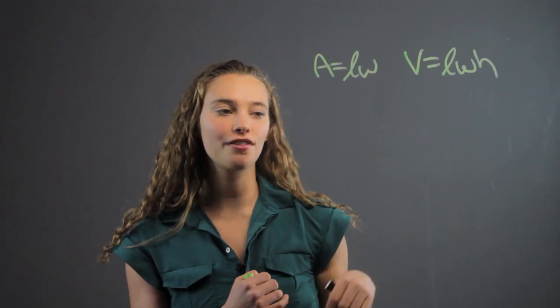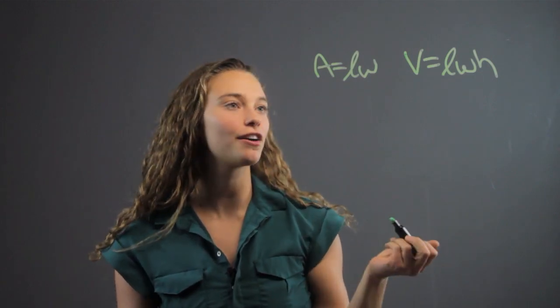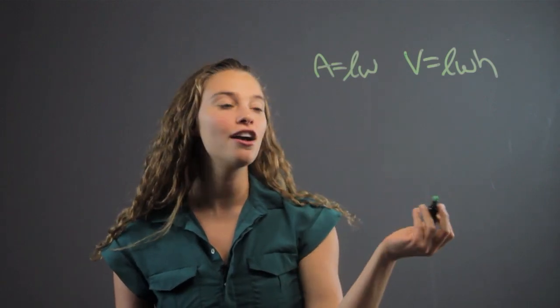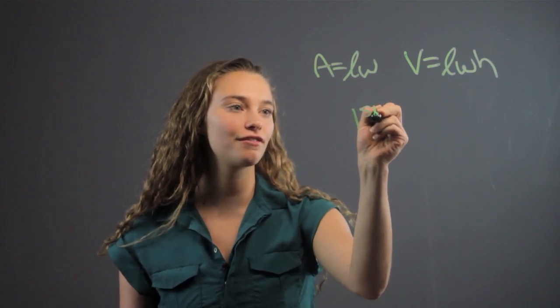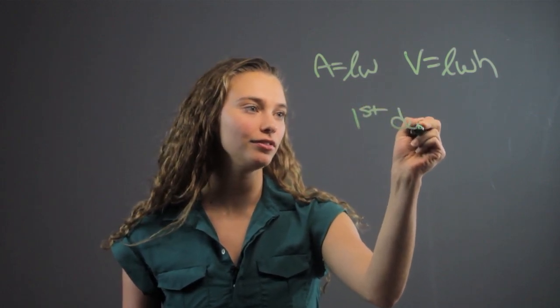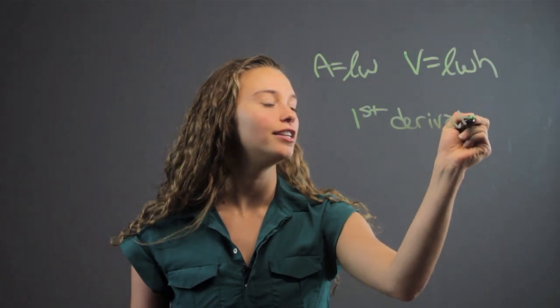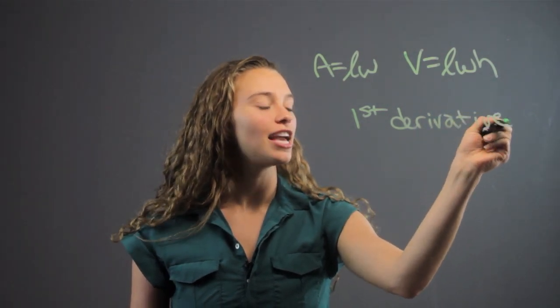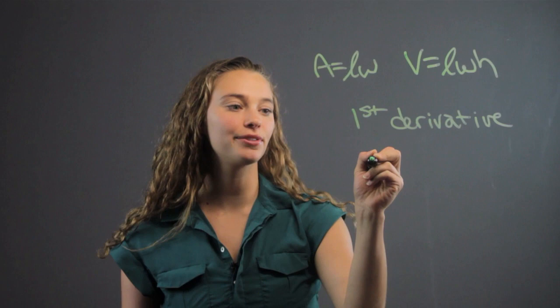Now, when you're maximizing the volume or the area, you're going to find the first derivative and then set it equal to zero.